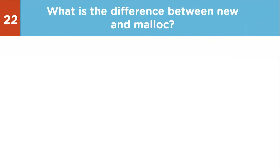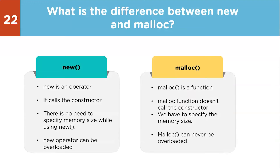Next question: what is the difference between new and malloc? Both are used to allocate memory. new is an operator whereas malloc is a function. The new operator calls the constructor; malloc does not. With new, there is no need to specify memory size, while malloc requires specifying the memory size. new can be overloaded whereas malloc can never be overloaded.